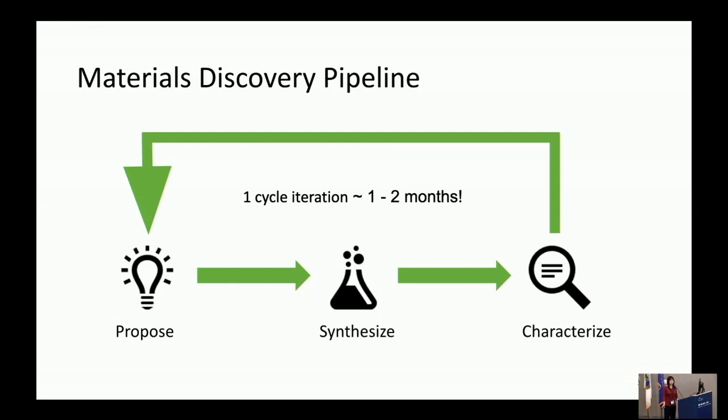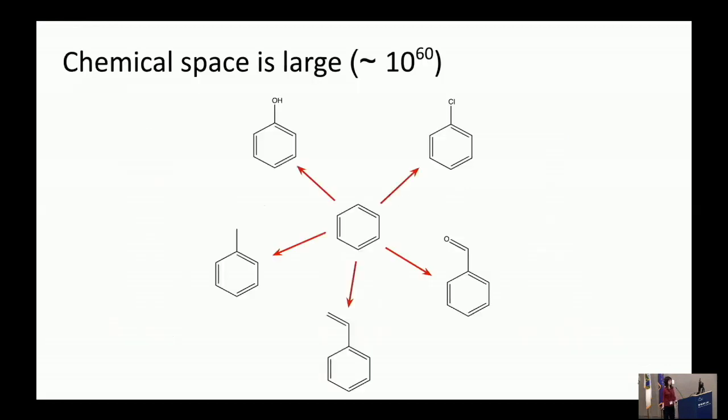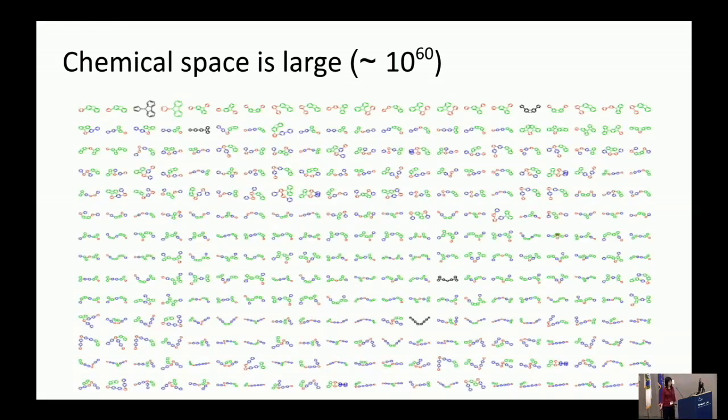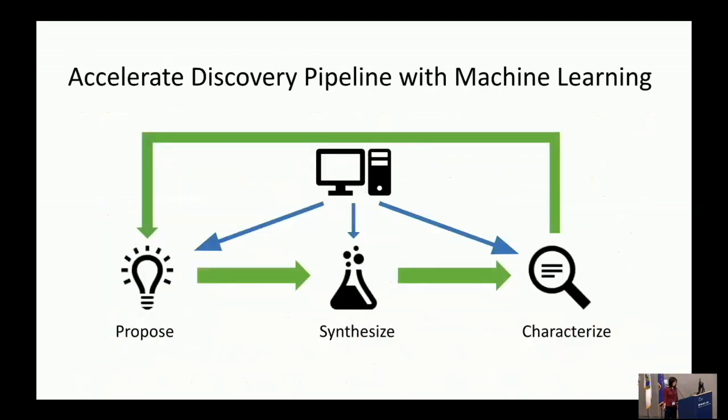You repeat this and propose new molecules, and the cycle can take one to two months per cycle. This is really slow, especially when you consider the fact that chemical space is absurdly large. It's very easy to make small tweaks to a molecule, just change the functional groups at the side, and you'll get a combinatorial explosion of molecule space. So it's very difficult to search for molecules that will solve particular problems if you do it in just a linear fashion. This is what got us motivated to think about ways of applying machine learning to chemical discovery.